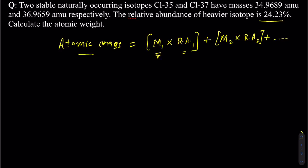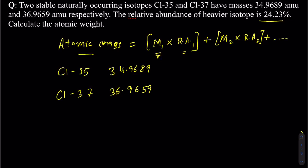In this particular case, I have chlorine-35 with a mass of 34.9689, and chlorine-37 with a mass of 36.9659. I'm given the relative abundance of the heavier isotope, which is 24.23%. Make sure you convert this to decimal form — divide by 100 — so it becomes 0.2423.